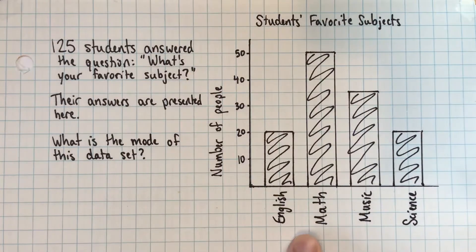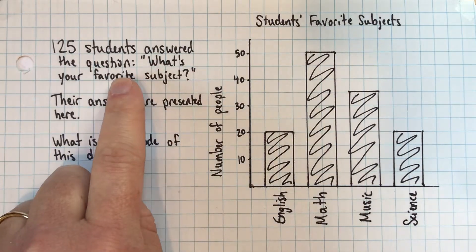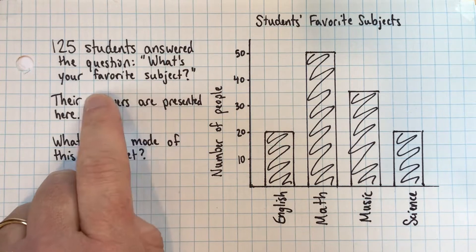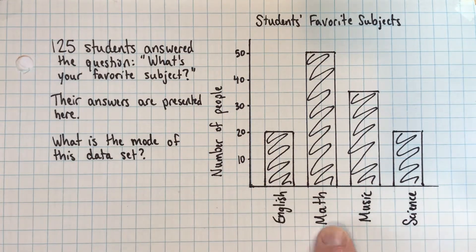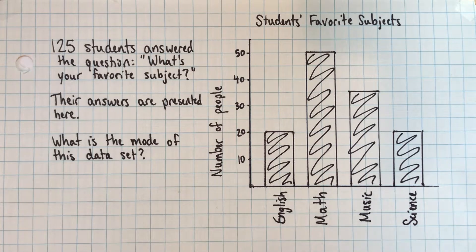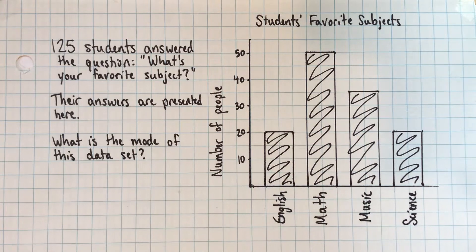We've got this graph here, this diagram. 125 students answered the question: what's your favorite subject? The options were English, math, music, and science, or at least those were the options that people chose. We've got those four subjects and the number of people for each.